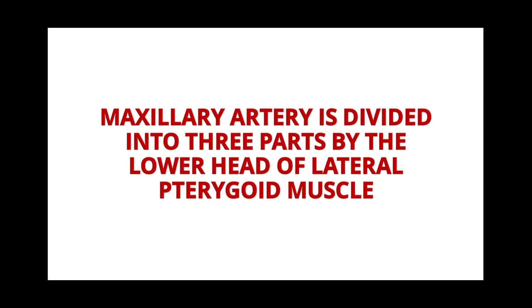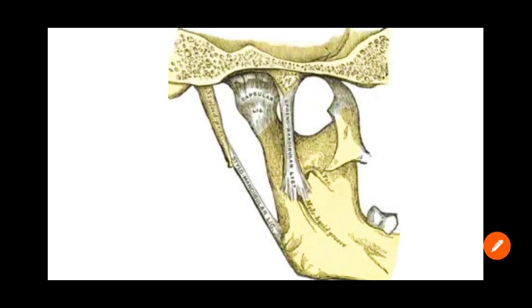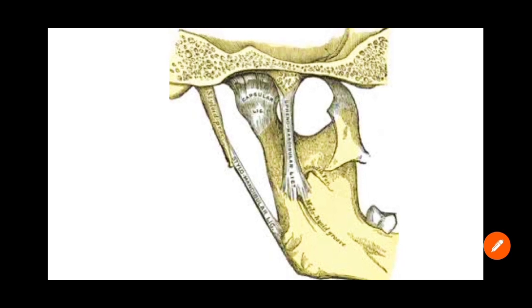Now we are going to discuss the course of the maxillary artery. The maxillary artery is divided into three parts by the lower head of the lateral pterygoid muscle. The first part is also called the mandibular part, running from its origin at the external carotid artery to the lower border of the lateral pterygoid muscle.